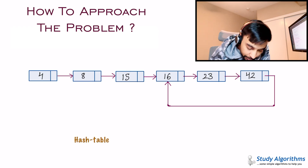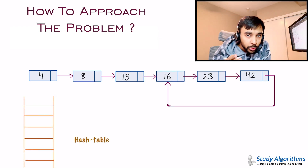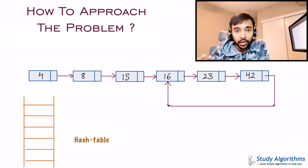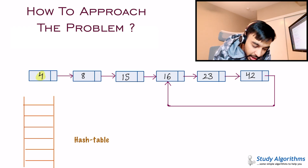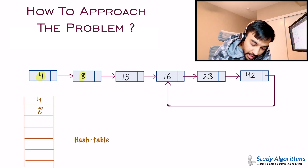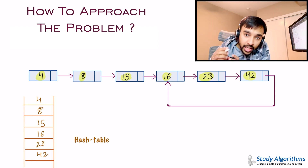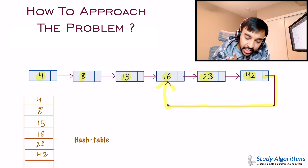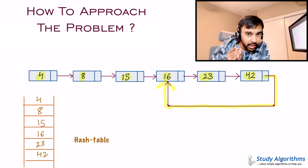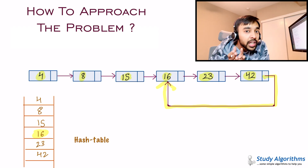You start traversing and keep adding elements to the hash table if they don't exist; if they exist, you've found a loop. You see 4 — not present, so you add it. Then 8, 15, 16, 23, and 42 all get added. Now as soon as you do a next, you reach the element 16 again. You look up the hash table, see that 16 is already present, and hence this value is repeated — so a loop exists.